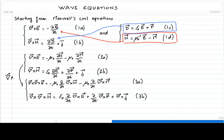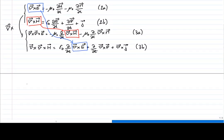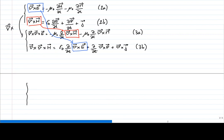To achieve this, we substitute equation 2a into equation 3b, replacing the curl of the electric field with the expression from 2a. Similarly, we use equation 2b to substitute the curl of the magnetic field in equation 3a. This allows us to rewrite both equations with only the electric field or only the magnetic field on each side.